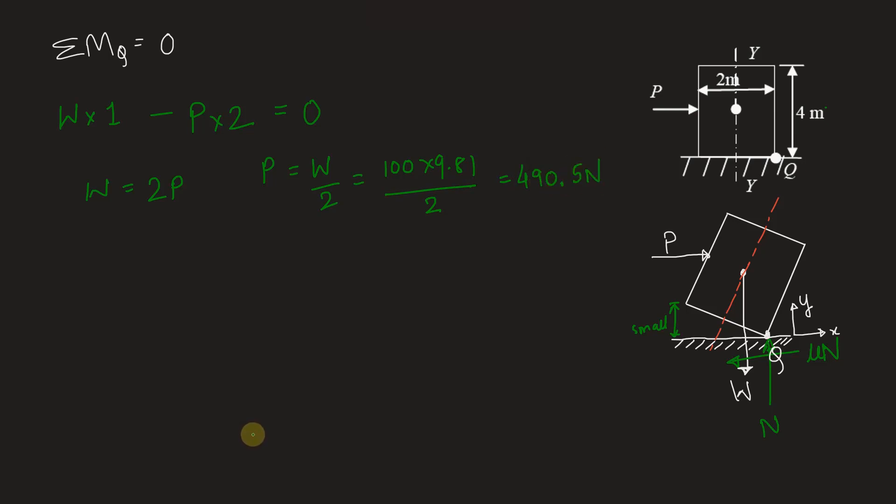We have the value of horizontal force now. We have to find the coefficient of friction. So to relate these two, we will take summation Fx equal to 0. That is sum of all horizontal forces should be 0. P is towards the right, we will take it as positive. So capital P minus friction force is towards the left, we will take it as negative. So it is minus mu n equal to 0. Mu will be therefore equal to P by n. We know P already from here but we need to find n.